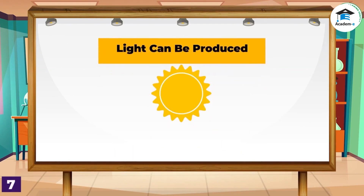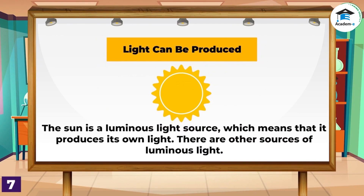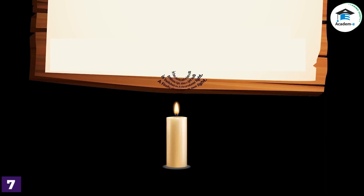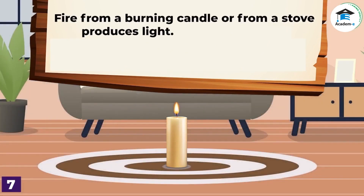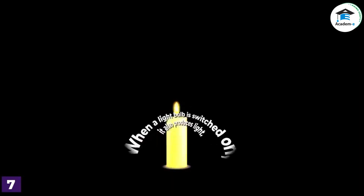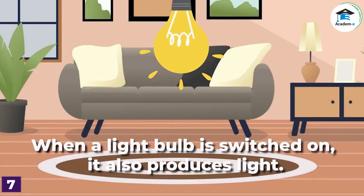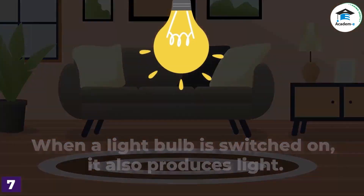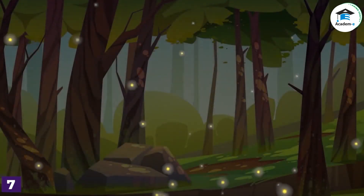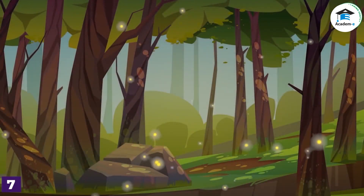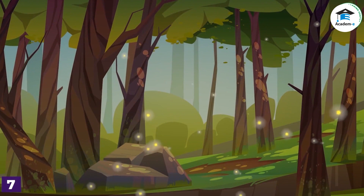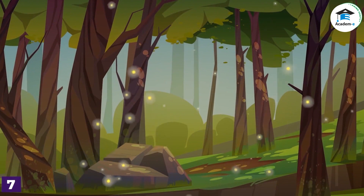Light can be produced. The sun is a luminous light source, which means that it produces its own light. There are other sources of luminous light: fire from a burning candle or from a stove produces light. When a light bulb is switched on, it also produces light. A firefly also produces its own light. These are all examples of luminous light sources.